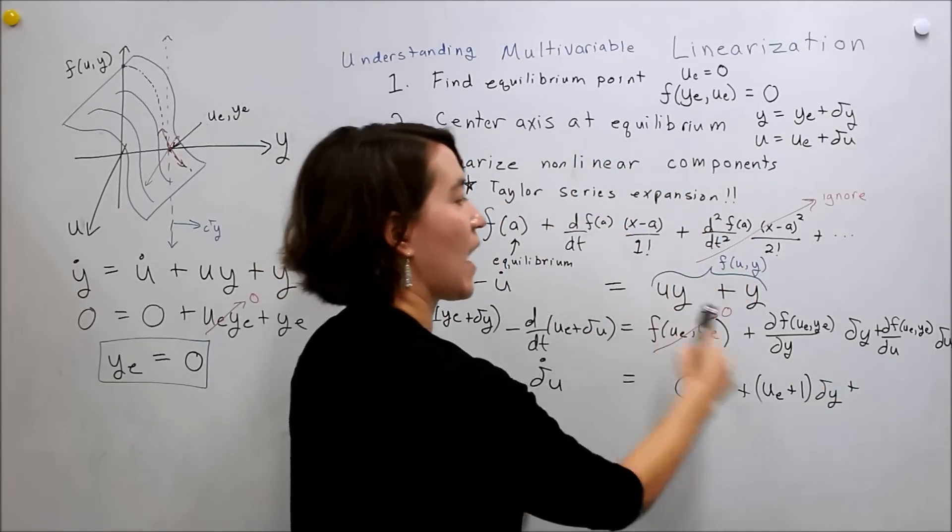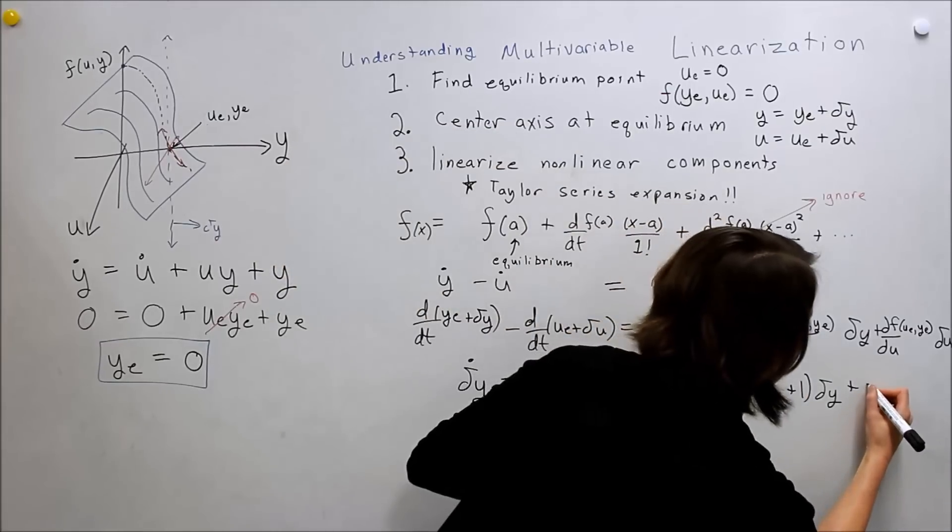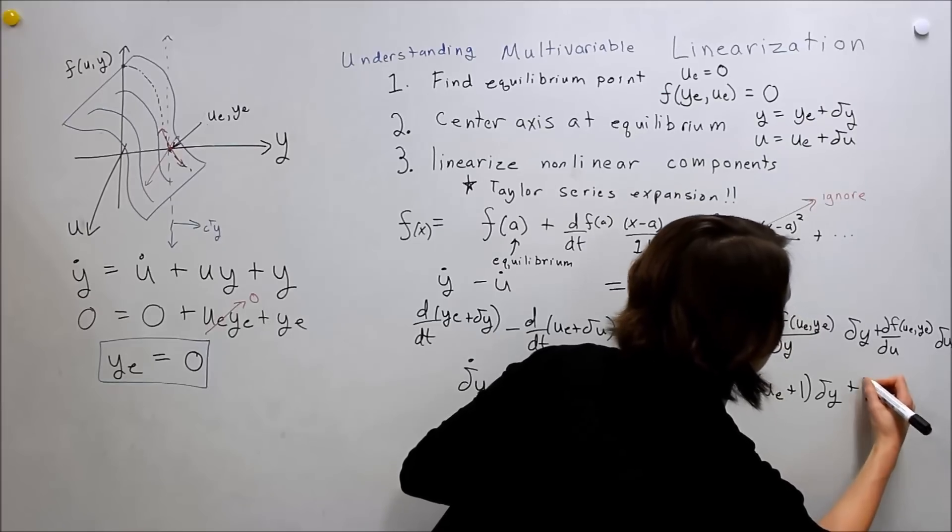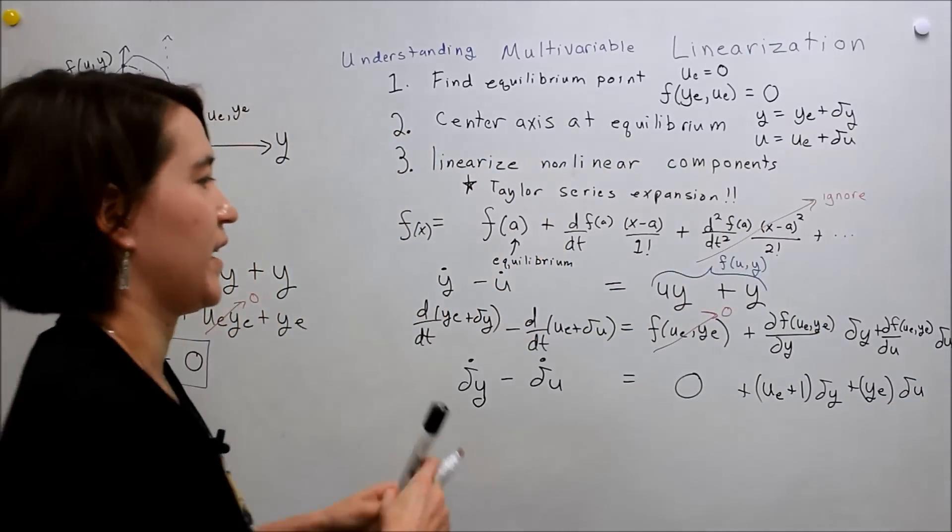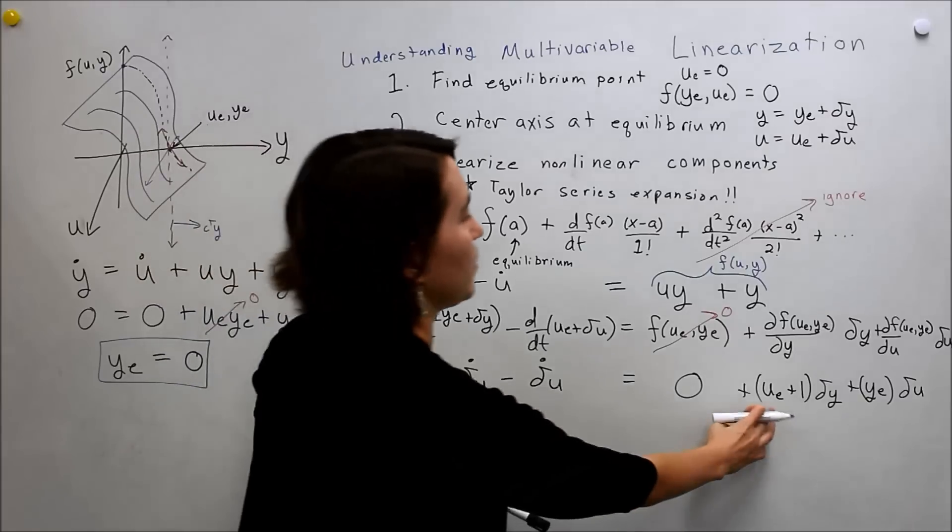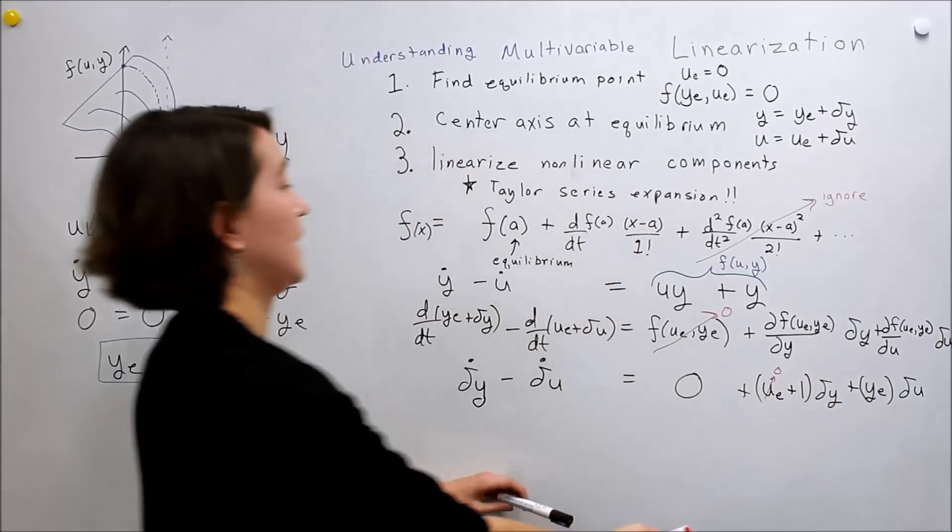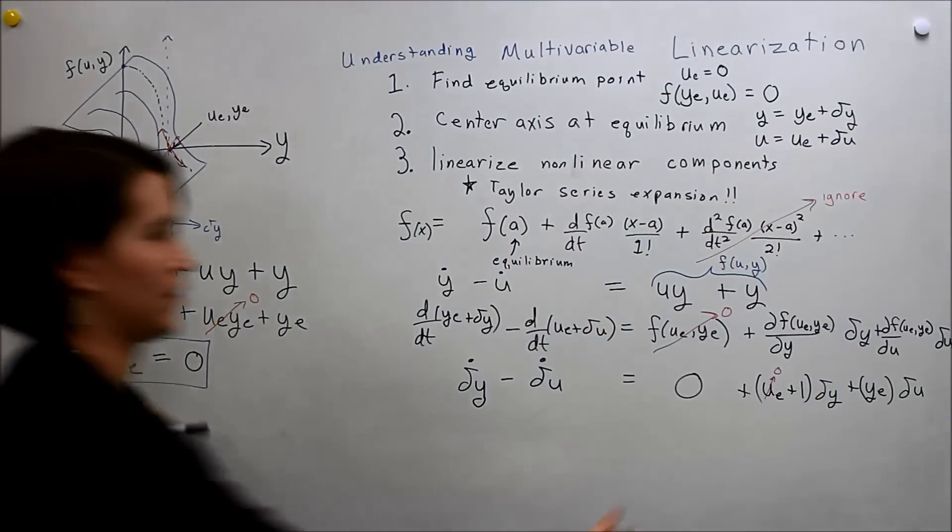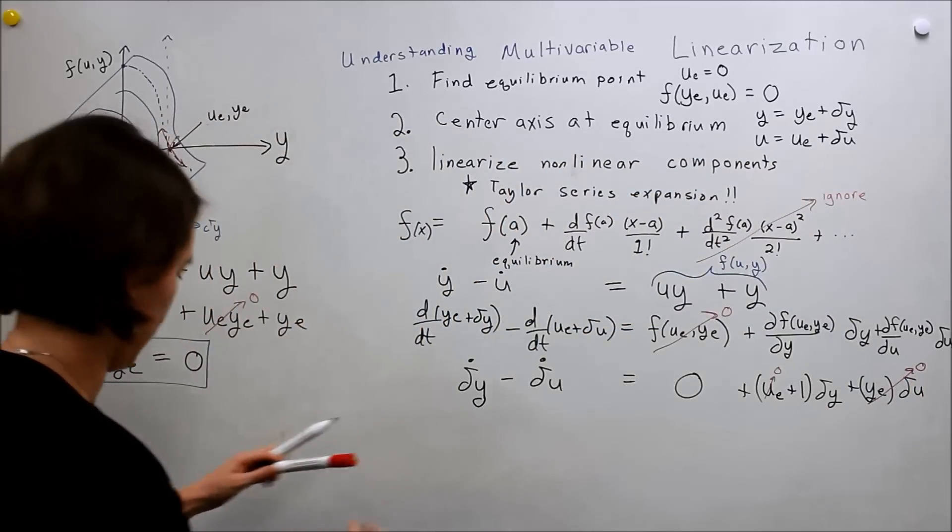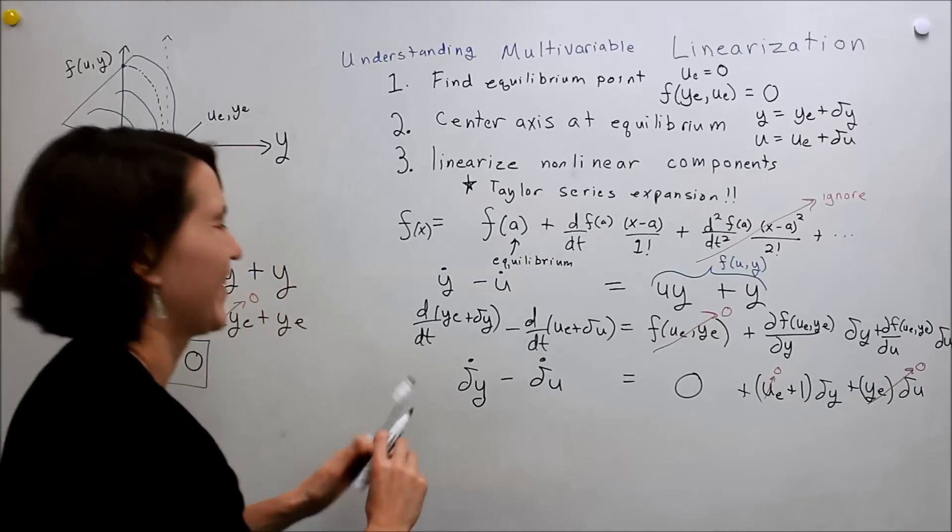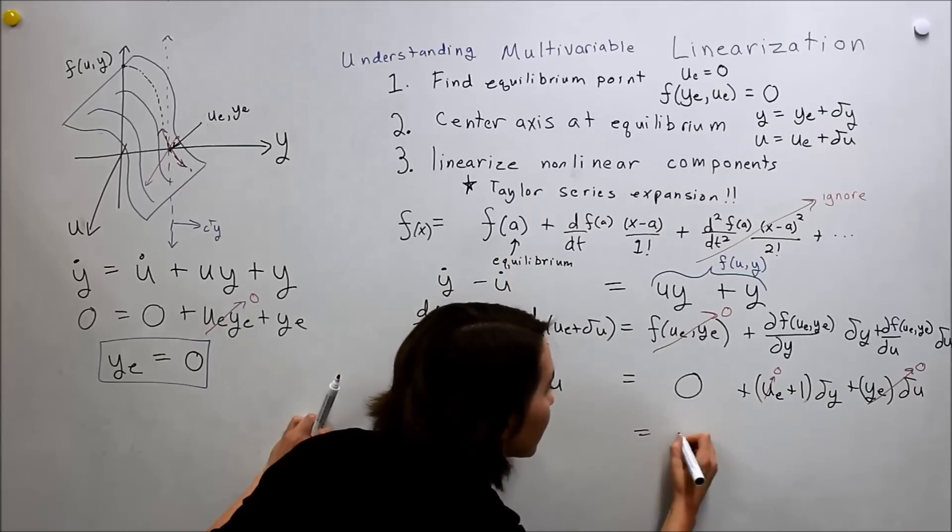And then, here again, now we'll take the partial in terms of u. This is 0, and the partial here would be just y. So, evaluated at y_e, multiply that by delta u. Here we luck out because u_e is 0, right? So, this will be 0. And y_e is also 0, so this will also go to 0. So, what we're left with, oh my gosh, is we're left with 0 plus 0 plus 1 delta y.